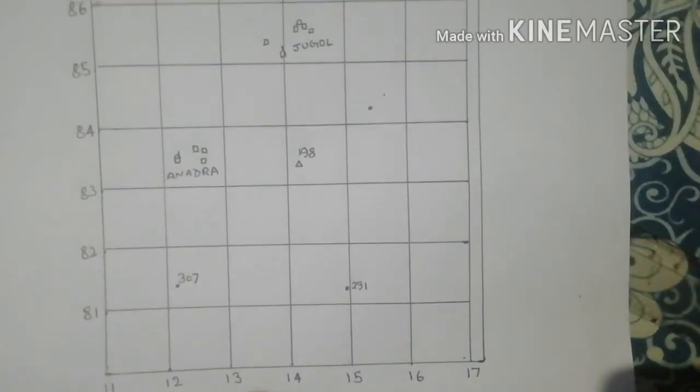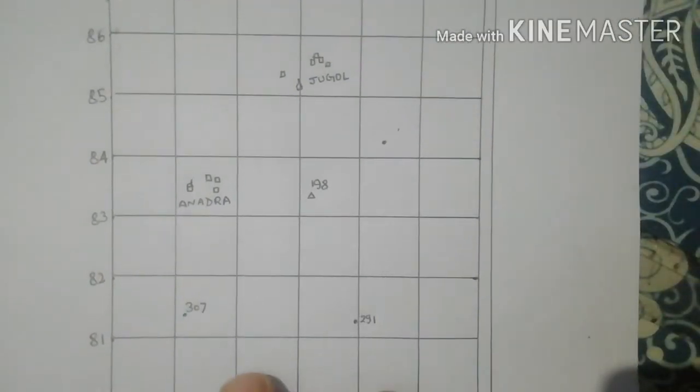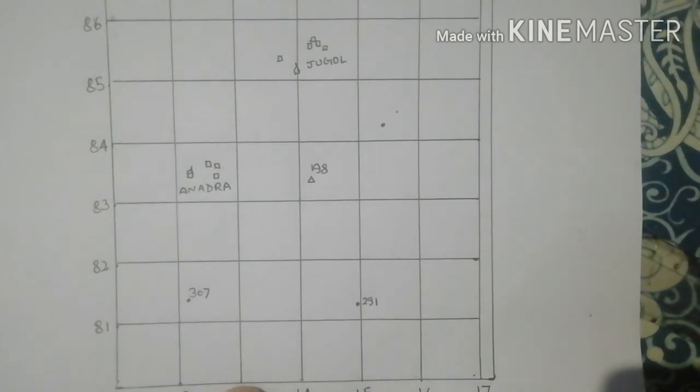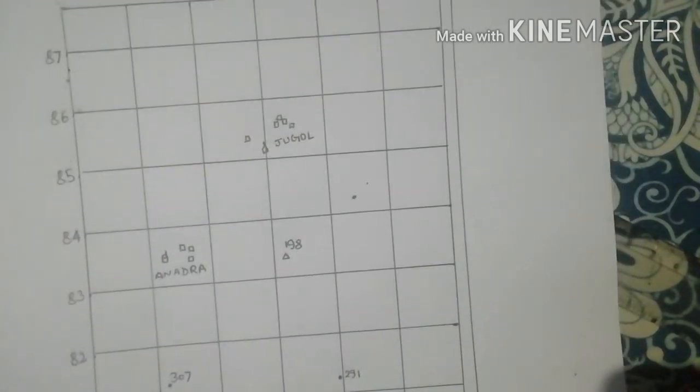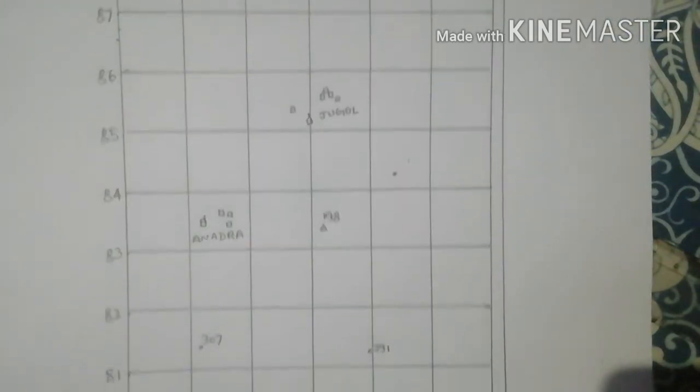You can see this is a proforma of the topographical sheet which I have drawn, and you can find so many conventional symbols present on the map. First of all, you can see the vertical lines and the horizontal lines with their values.